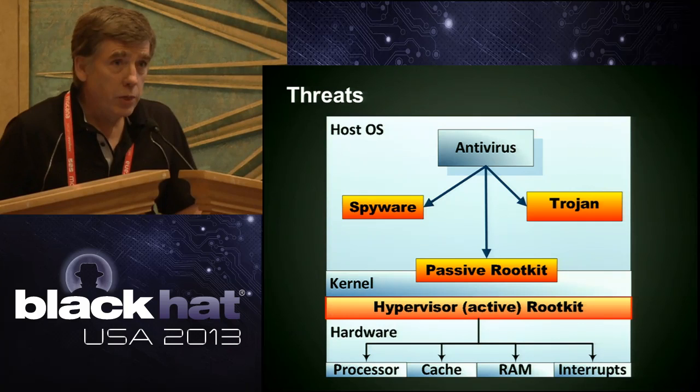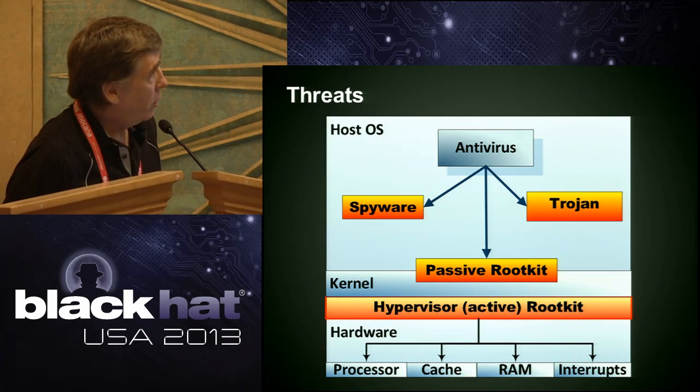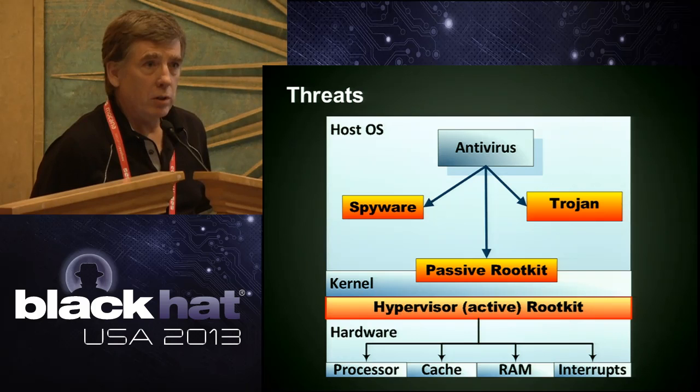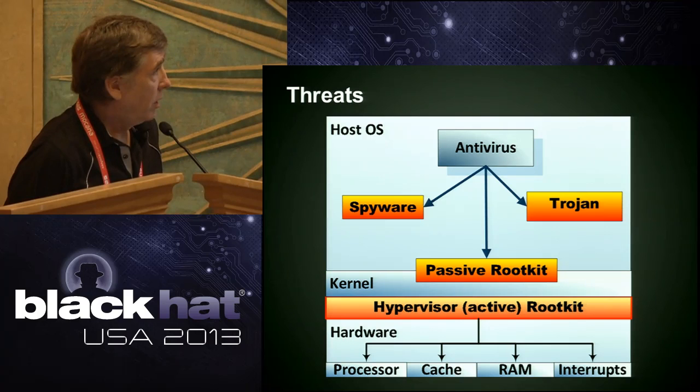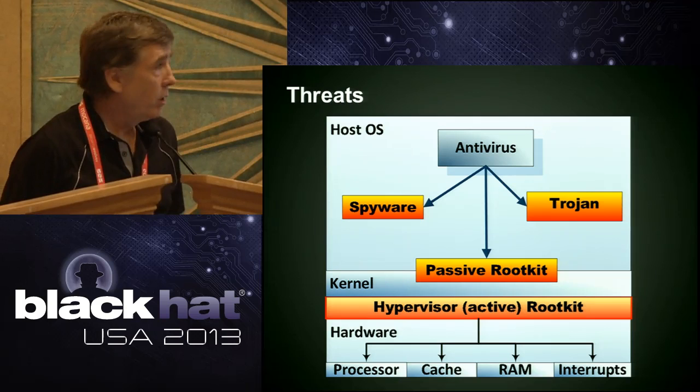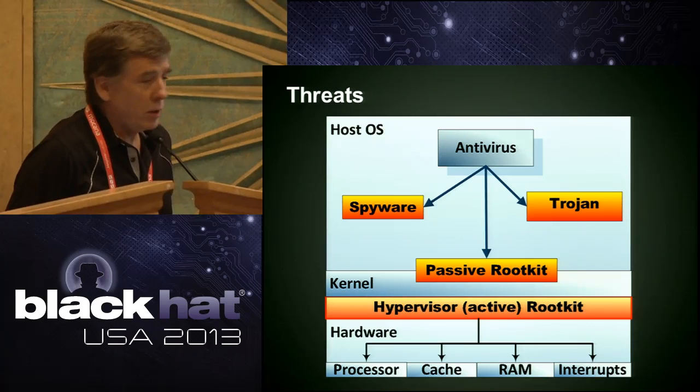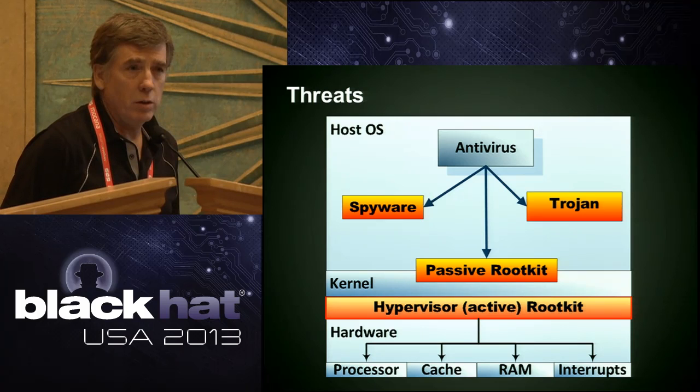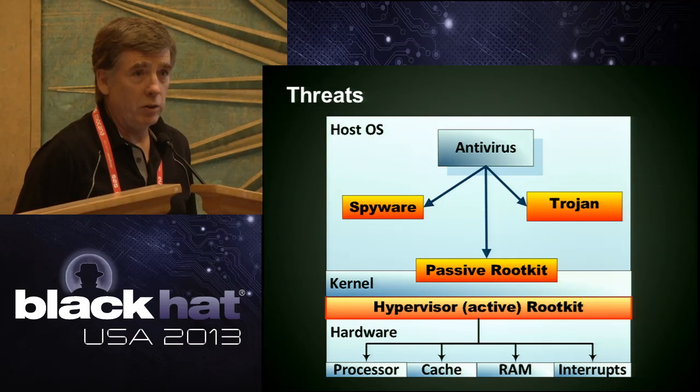So, threats. We're targeting a specific threat. Traditional antivirus software uses signature-based algorithms and behavioral modeling to identify threats. It's looking in the host OS for spyware, trojans, and passive rootkits. These signature-based mechanisms and behavioral models require a lot of scanning — consistent scanning — and updates to the databases.